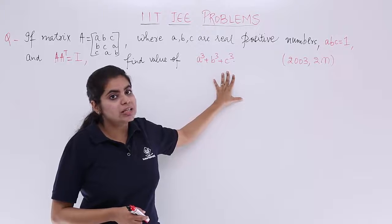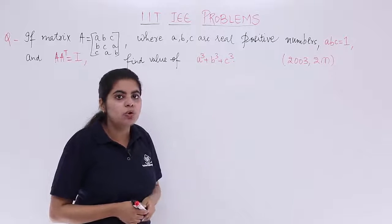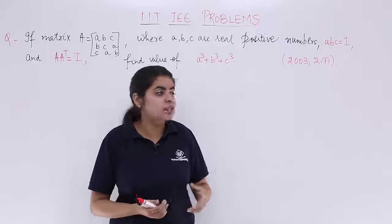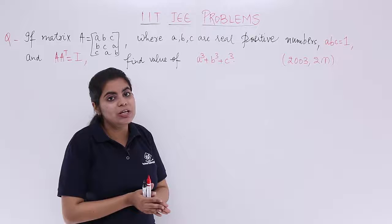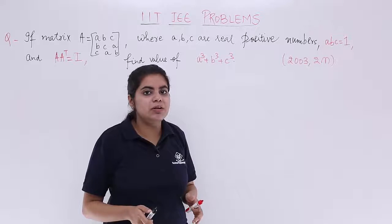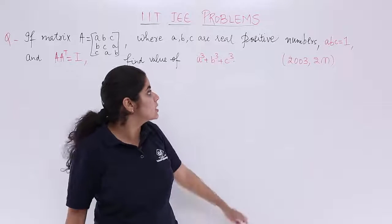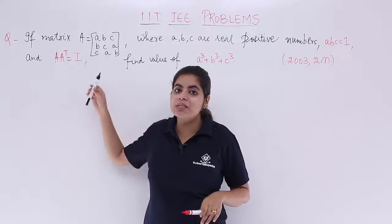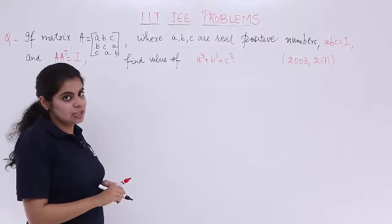Now to find such a value, you basically need to know whether any mathematical formula contains these terms. Yes — it is the A³ + B³ + C³ − 3ABC formula. We will be writing that formula, but first let's use the given conditions: ABC = 1 and AA transpose = I. Let's use AA transpose = I.